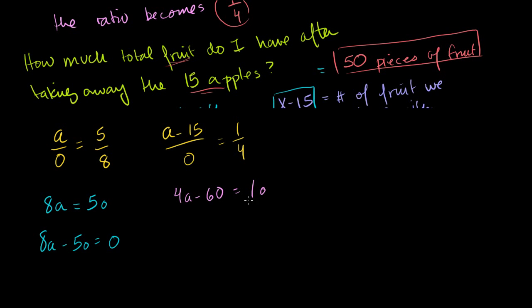And if we rearrange this, if we subtract the 1O from both sides, we get 4A minus 1O minus 60 is equal to 0. Or if we add 60 to both sides, we get 4A minus 1O is equal to 60.